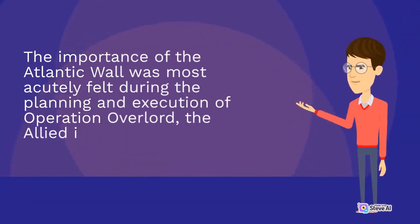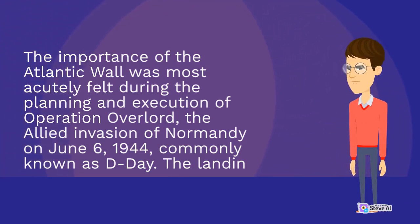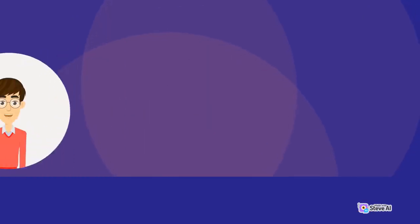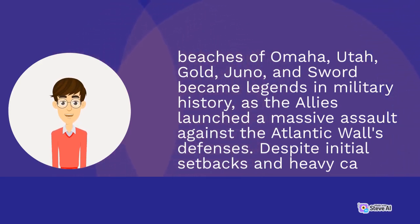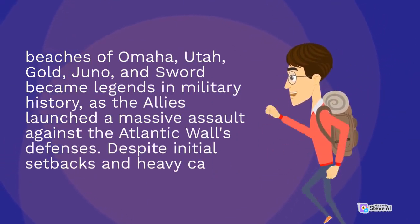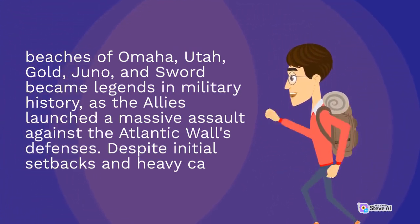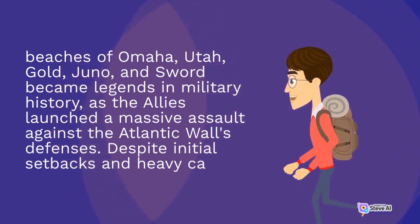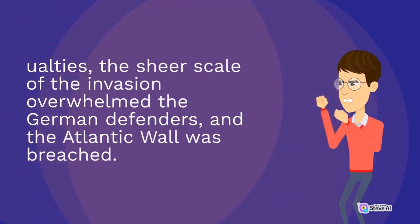The importance of the Atlantic Wall was most acutely felt during the planning and execution of Operation Overlord, the Allied invasion of Normandy on June 6, 1944, commonly known as D-Day. The landing beaches of Omaha, Utah, Gold, Juno, and Sword became legends in military history, as the Allies launched a massive assault against the Atlantic Wall's defenses. Despite initial setbacks and heavy casualties, the sheer scale of the invasion overwhelmed the German defenders, and the Atlantic Wall was breached.